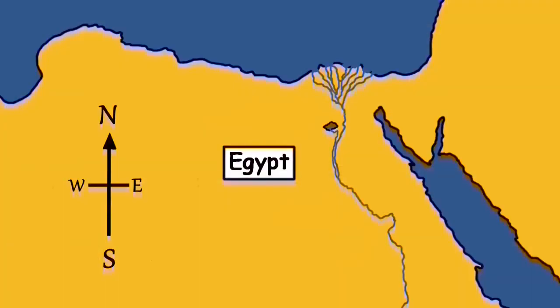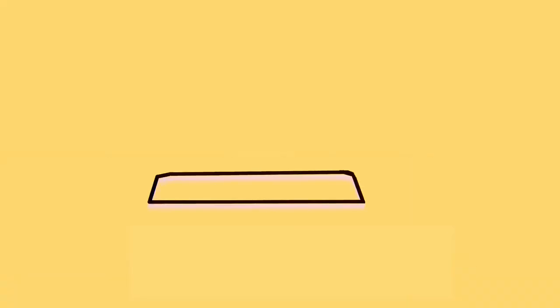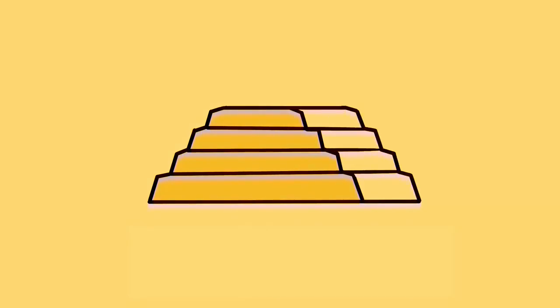Djoser decided to build his tomb at Saqqara, and modern analysis show that originally it was a large mastaba. However, on completion, the decision was made to build three more mastabas on top of each other, stacking them to create a four-step pyramid. Once completed, ambition kicked in once more, and it was decided to enlarge the base, expand, and add two more mastabas on top, turning it into a six-step pyramid.